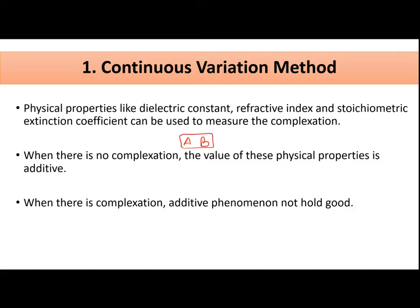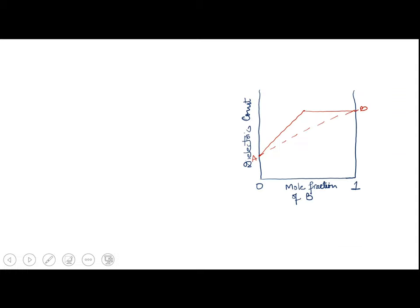If there is no complex between species A and B, their physical properties — such as dielectric constant, refractive index, or extinction coefficient — will be additive. That means the dielectric constant of A will simply add to the dielectric constant of B when they are mixed. On the other hand, if complexation occurs, this additive property will not hold true.